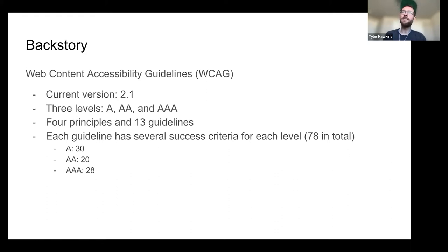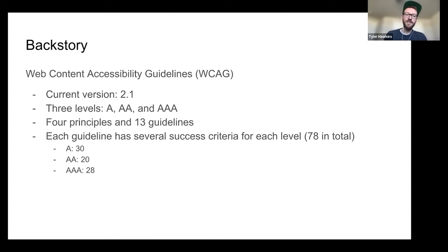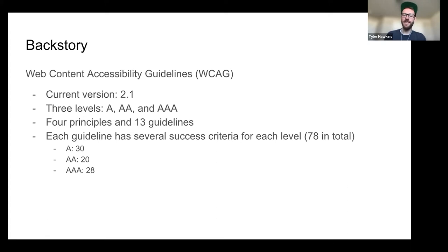When evaluating the accessibility of your product or website, the internationally recognized standard is the Web Content Accessibility Guidelines, or WCAG, currently at version 2.1. There are three different levels of conformance: A, AA, and AAA. Within the guidelines there are four general principles and 13 guidelines, with 78 very specific success criteria in total. Level A is the easiest to achieve, AA is the industry standard, and AAA is much more strict and harder to achieve.